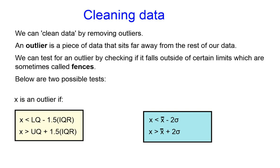In this video we're going to have a look at how we can clean data. We clean data by removing outliers. An outlier is a piece of data that sits far away from the rest of our data. We can test for an outlier by checking if it falls outside of certain limits, which we sometimes call fences.